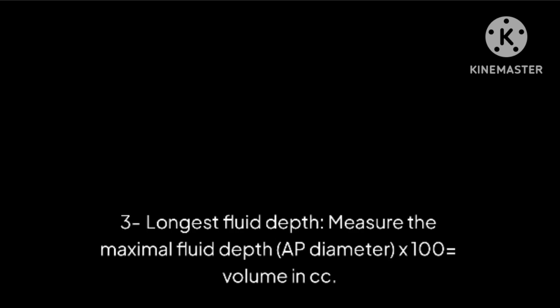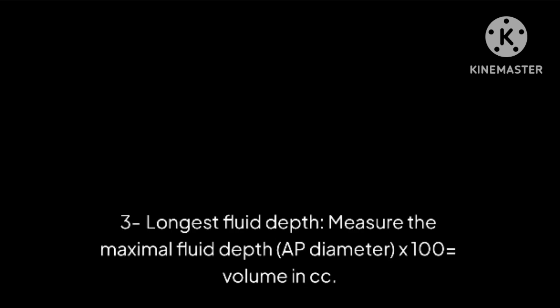Method 3: Longest fluid depth. Measure the maximal fluid depth anteroposterior diameter multiplied by 100 equals volume in cc. Depth of deepest pocket in centimeters multiplied by 100 equals volume in cc.